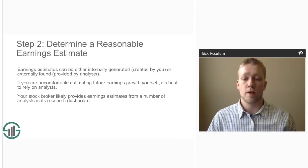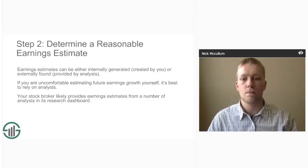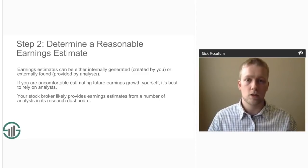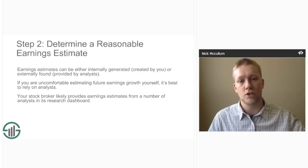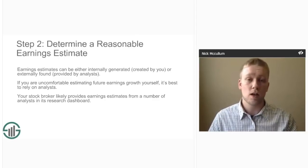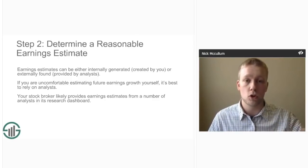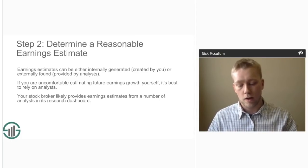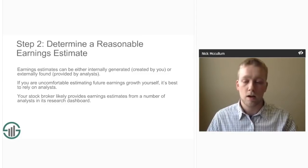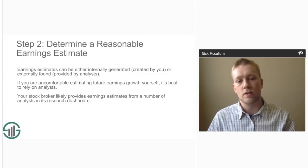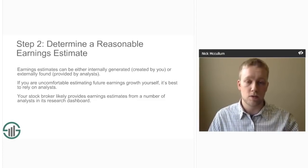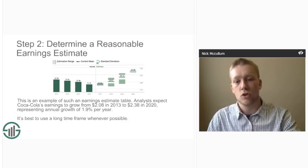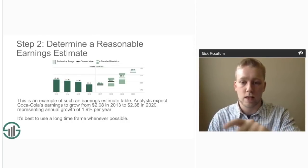The next step is to determine a reasonable estimate for the future earnings growth of Coca-Cola. These estimates can be internally generated — determined by you — or externally generated by professional analysts. If you're uncomfortable making your own estimates, we recommend using analyst estimates wherever possible. Individual analysts can be wrong, so the best way is to gather a bundle of analyst estimates from your stock broker and average them out. Most brokers have a research platform that provides future analyst estimates on an average basis.